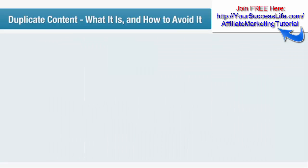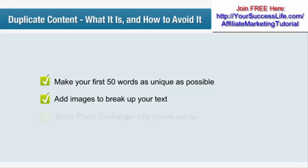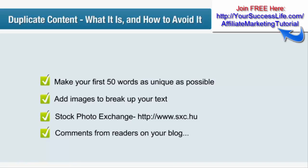There are other ways of ensuring your web pages are seen as unique content by the search engines. In particular, make sure that the first 50 words are as unique as possible. You could, for example, add your own introduction to each private label rights article that you use. You could also add images to break up the text. You can get free images for your website from a stock photo exchange website such as sxc.hu, but be sure to check the terms and conditions. Or if you're running a blog, comments from readers of your post may also help to increase the amount of unique content on your page.